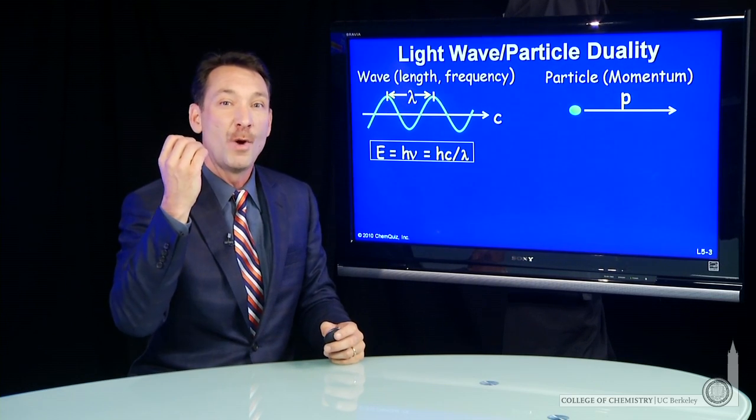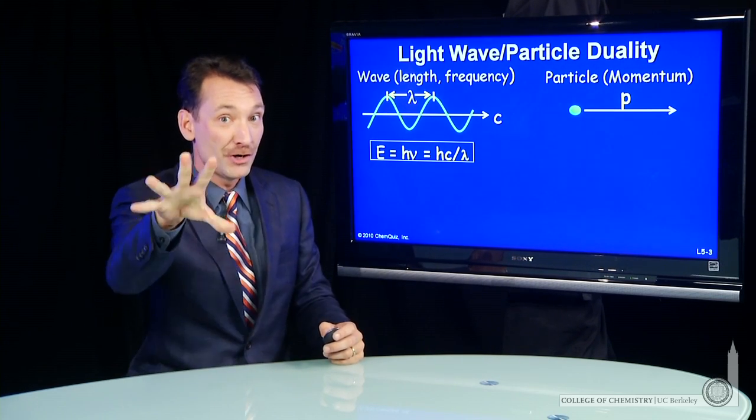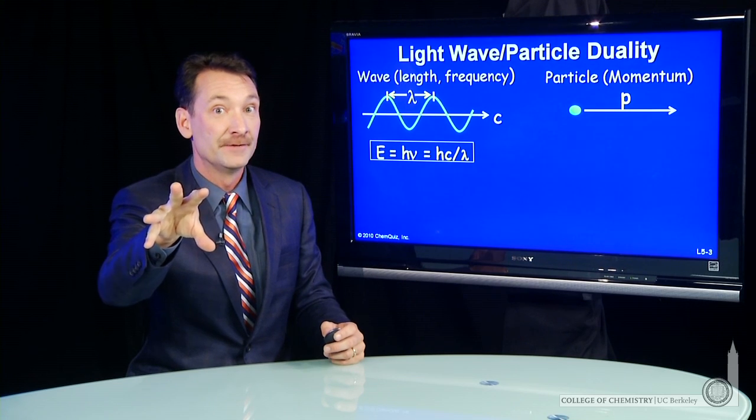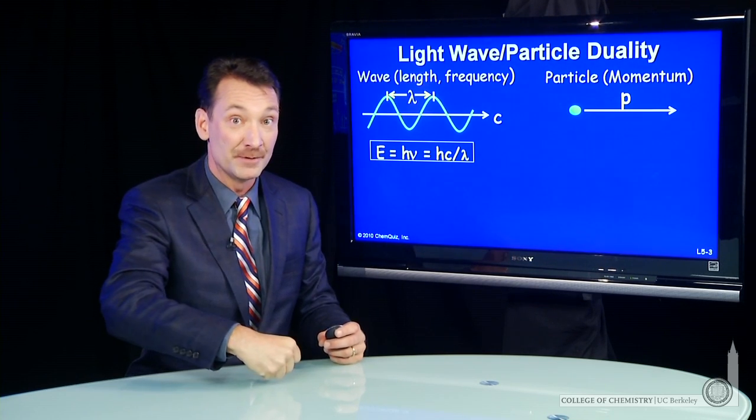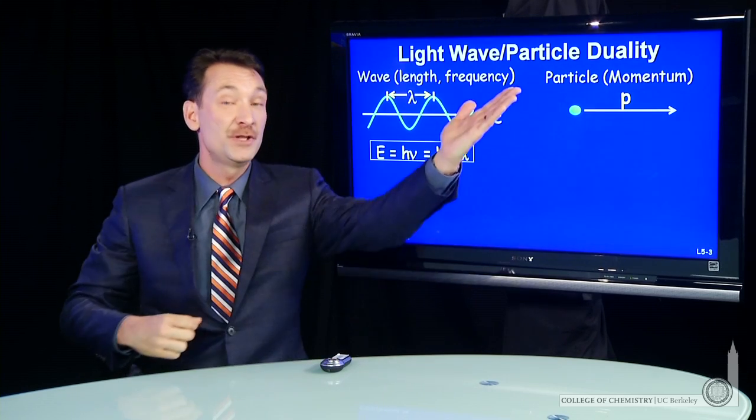Now, the wave particle, the light particle that we call a photon, has a momentum. We've seen it can transfer momentum from the photon onto the electron.